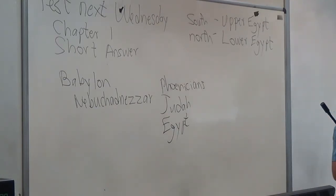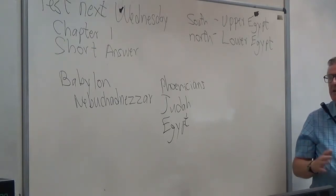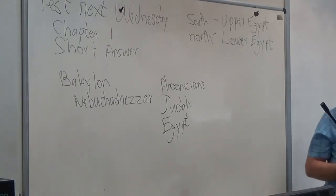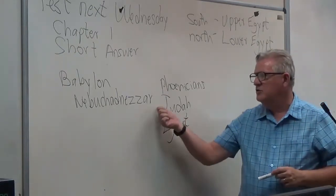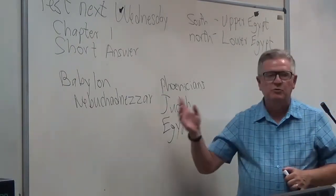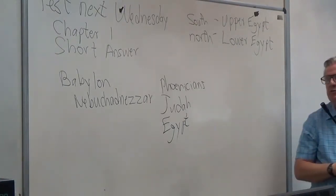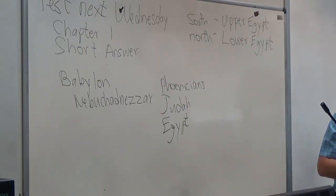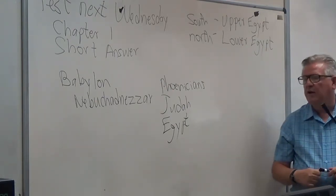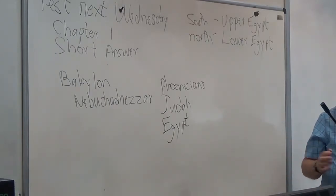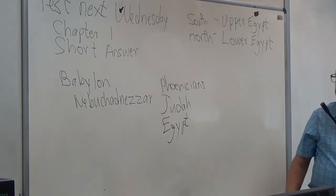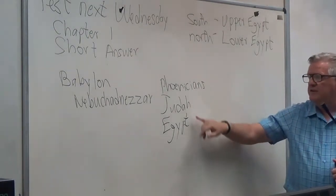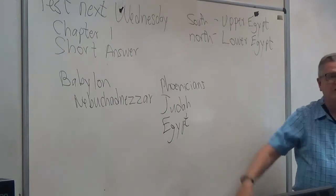For those who know the Bible, Nebuchadnezzar is mentioned particularly by Jeremiah and Daniel, both of whom lived at the same time. Jeremiah predicted that Nebuchadnezzar would win when he was invading Judah, so Nebuchadnezzar told Jeremiah he could go where he wanted or stay. Jeremiah chose to stay in Judah. Many people of Judah went to Egypt, and Nebuchadnezzar conquered Egypt also.